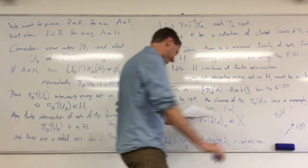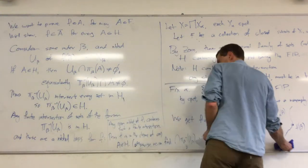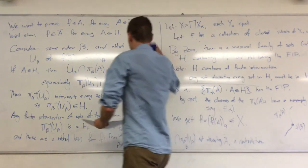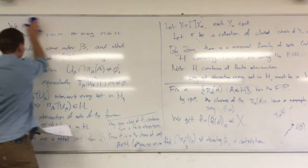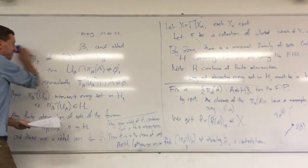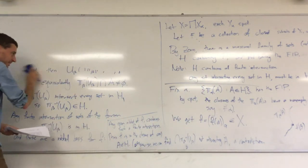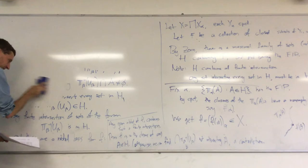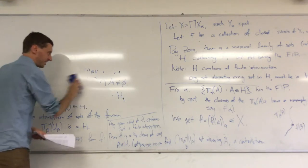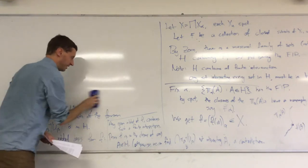So we proved that this collection of closed subsets with the finite intersection property had a non-empty intersection, and we proved the whole thing was compact. Exhausting! With that in hand, we can give a pretty snappy proof of the general version of Banach-Alaoglu.